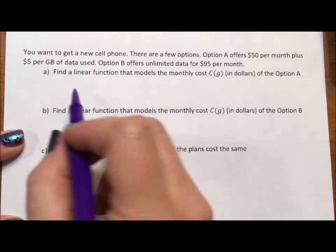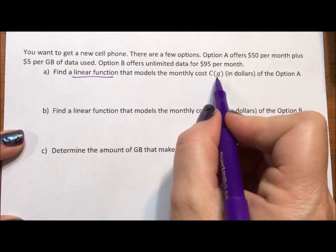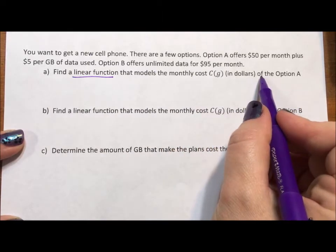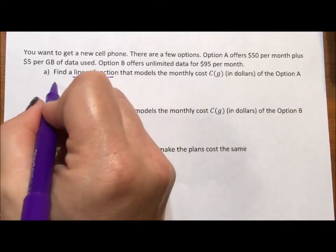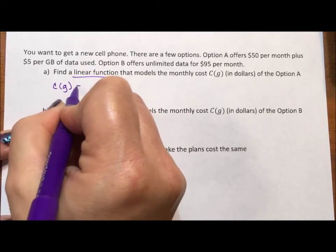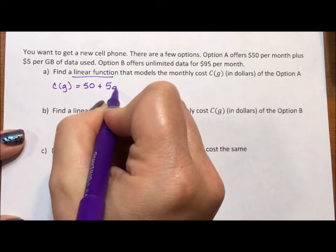Okay, so it says find a linear function that models monthly costs C(g) in dollars of option A. So the cost per gigabyte for option A is $50 plus $5 per gigabyte.